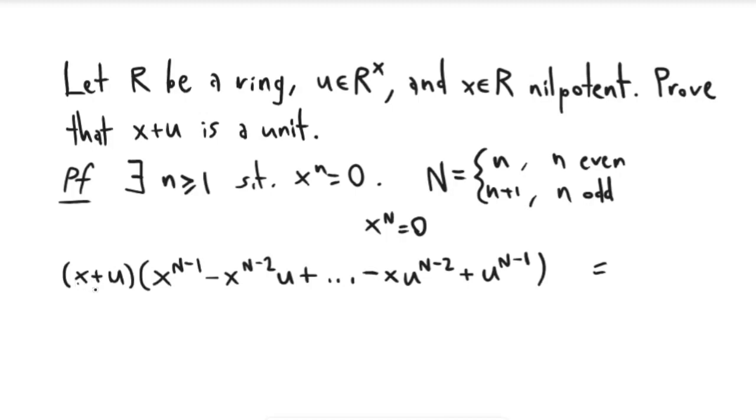So if I multiply x times this term right here, I'll get x to the big n minus 1 times u. But also if I multiply u by x to the big n minus 1, I get the same thing. And with this one I have a negative, and with the other one I have a positive. So all of these terms basically cancel down. And the only thing that I'm actually left with is x to the n minus u to the n at the end.